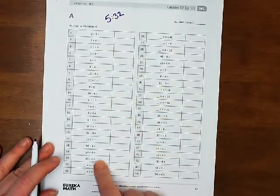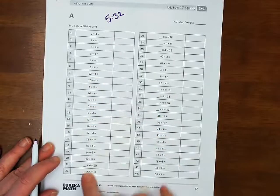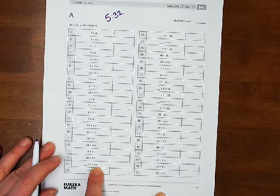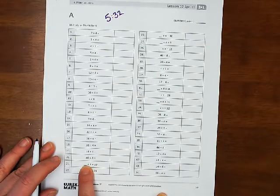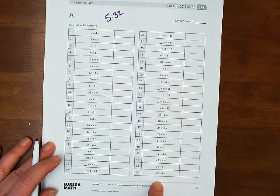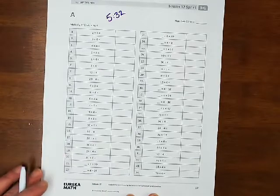This sheet has all sorts of stuff. It's got multiplication, it's got division, it has a missing factor where the product is known but there's a missing factor. So you can see we've got all kinds of different types of problems there.